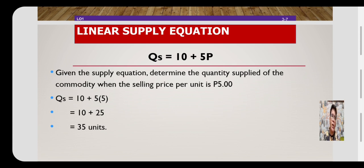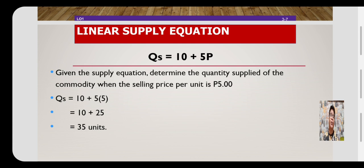What if the price is set at 5 pesos per unit? Given the supply equation, determine the quantity supplied when the selling price per unit is 5 pesos. We substitute 5 pesos into P: Qs equals 10 plus 5 times 5, which simplifies to give us a value of 35 units. So quantity supplied is 35 units when the price per unit is 5 pesos.